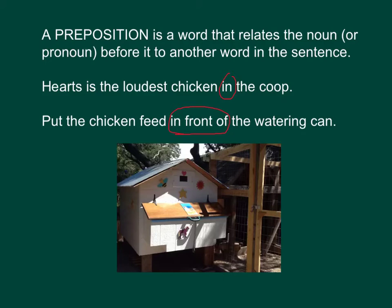The second sentence is an example of how sometimes prepositions can be more than one word. So maybe in that definition you should say 'word or words,' but anyway it's more common for it to be just one word. In this sentence — 'Put the chicken feed in front of the watering can' — the chicken feed is the noun that's being related to the watering can. What's the relation? It's in front of the watering can.